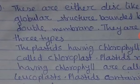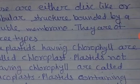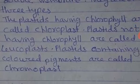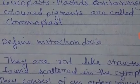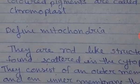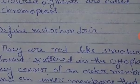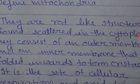Question number four: what are plastids? Plastids are disc-like or globular structures bounded by a double membrane. They are of three types: plastids having chlorophyll are called chloroplasts, plastids not having chlorophyll are called leucoplasts, and plastids containing colored pigments are called chromoplasts.